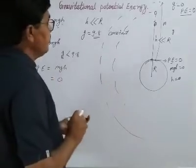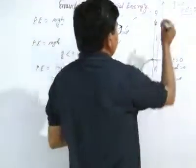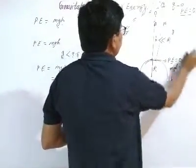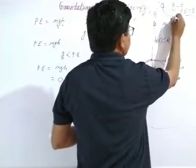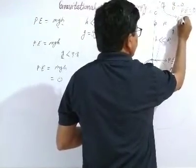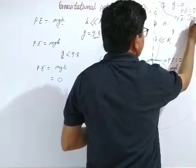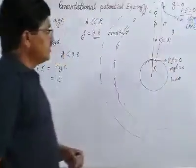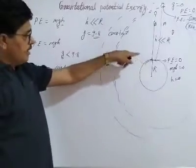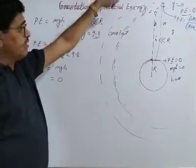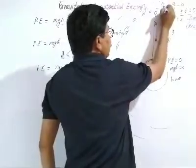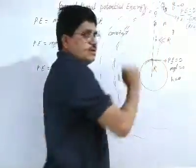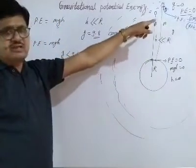Just below the point where g equals zero, the value of the potential energy is equal to minus G M m divided by (R + h), because the height of that object is very very large. Just below where g equals zero, the value of g is still something but it is negative, and due to this reason the potential energy is also negative.